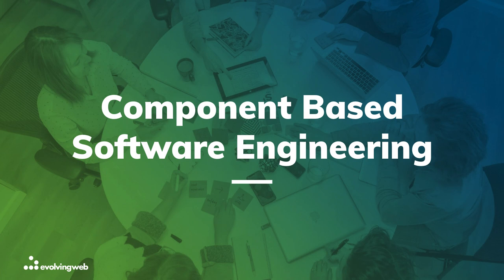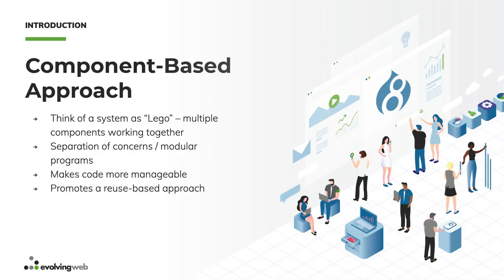Without further ado, let's take a look at what component-based software engineering is. This school of thought promotes the idea of thinking of a system — in our case a website — as a bunch of small pieces, components working together. For example, if you're building a button set with three buttons side by side, you can think of it as two components: the button component, concerned about how the button looks, and the button set component, which arranges the buttons side by side and handles responsive layout like stacking on mobile.